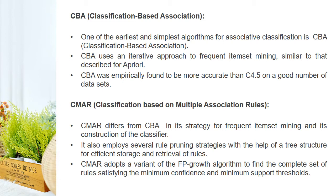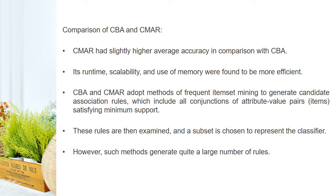The next method is CMAR, that is Classification based on Multiple Association Rules. It differs from CBA in its strategy for frequent itemset mining and its construction of the classifier. It also employs several rule pruning strategies with the help of a tree structure for efficient storage and retrieval of rules. CMAR adopts a variant of the FP-growth algorithm to find the complete set of rules satisfying the minimum confidence and minimum support threshold.